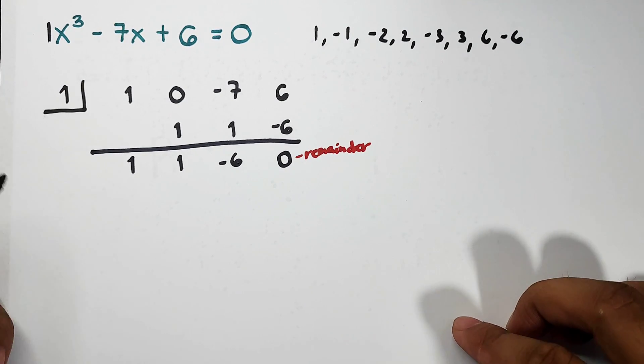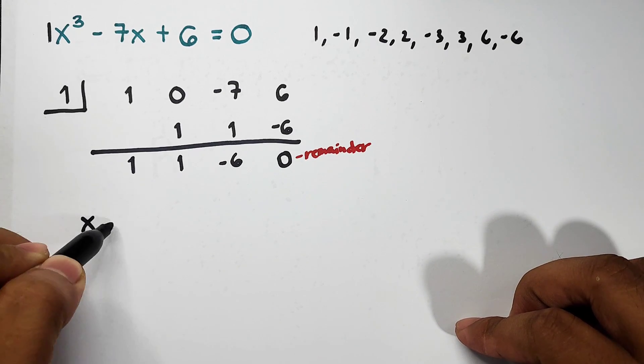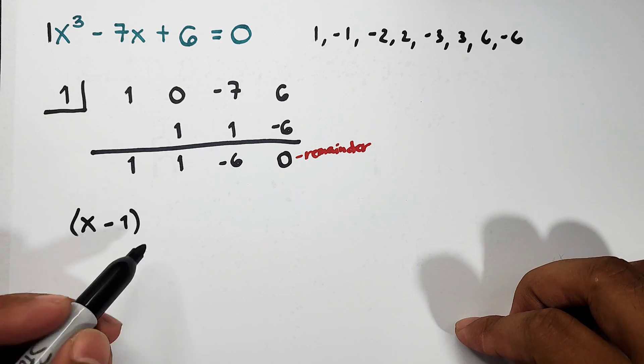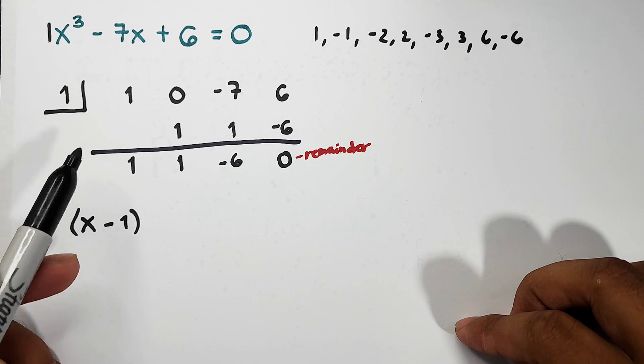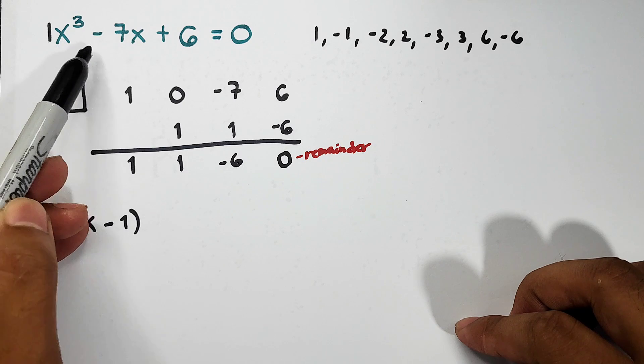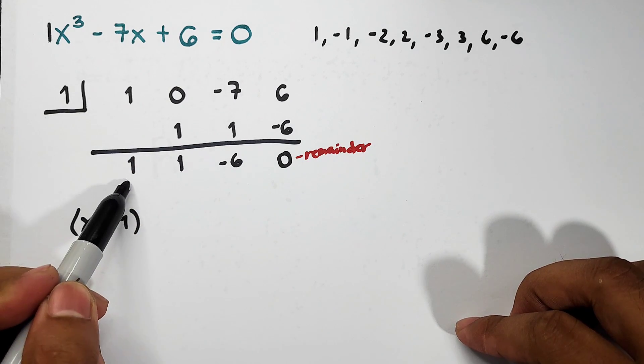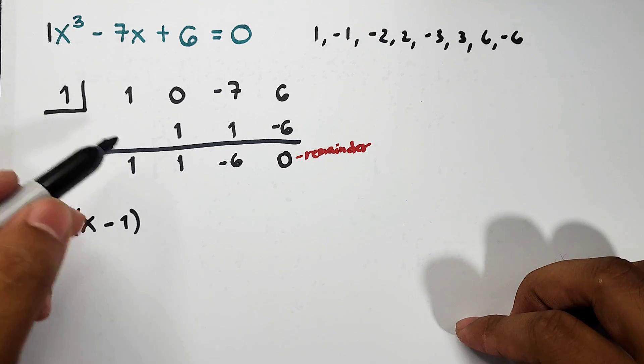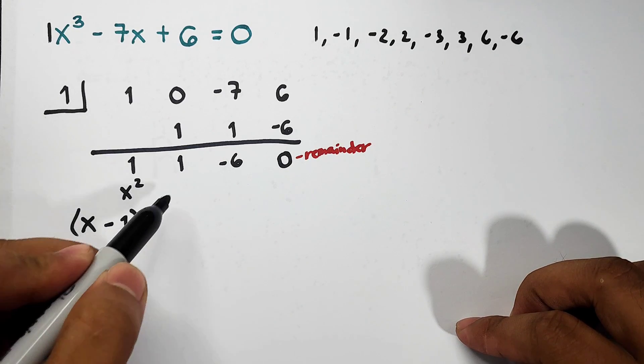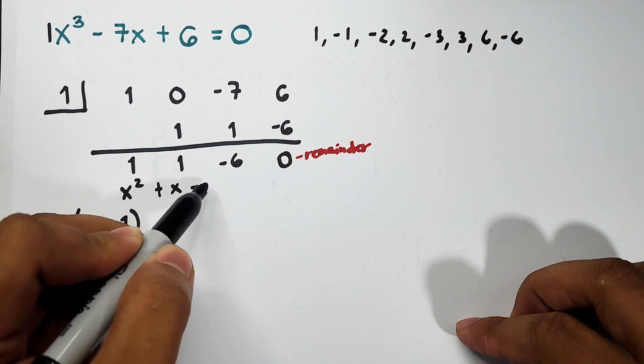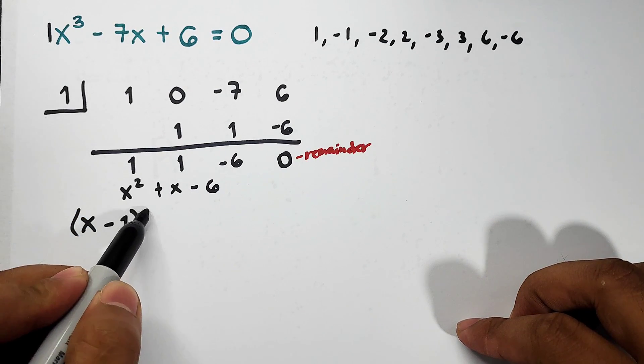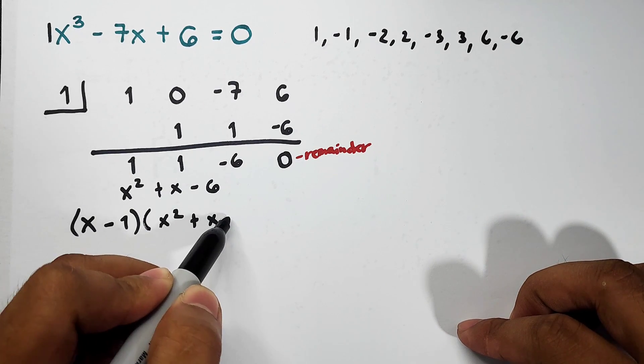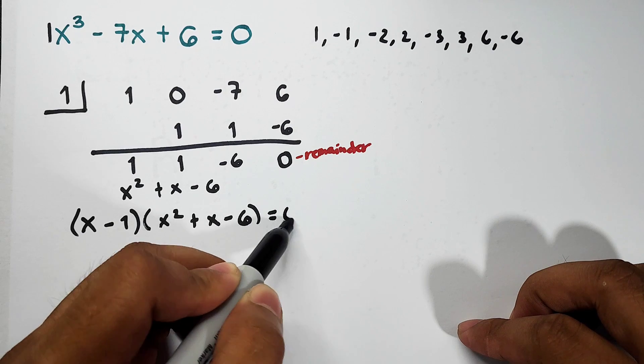So 1 is a root, or as a factor it's x minus 1. Now what about the other factor? Since this is x cubed, if we subtract 1 it becomes x squared. This is plus x minus 6. So our factors now are x minus 1 times x squared plus x minus 6 equals 0.